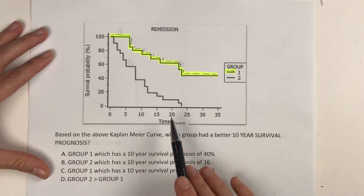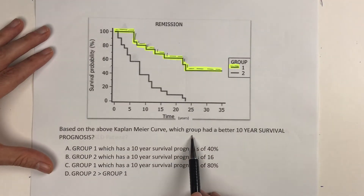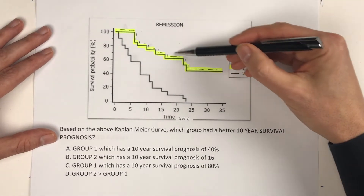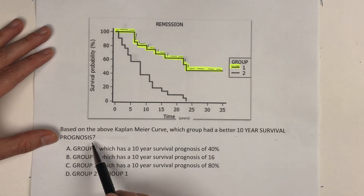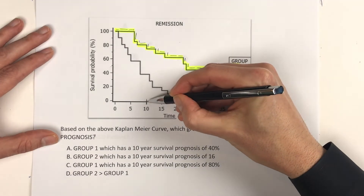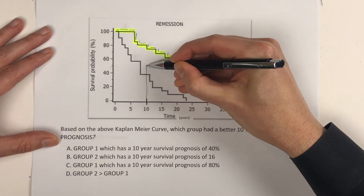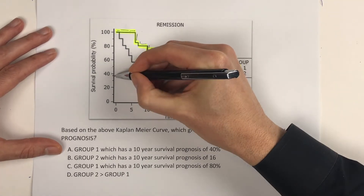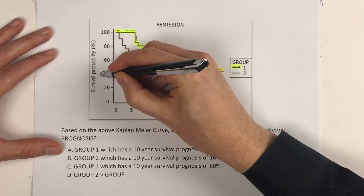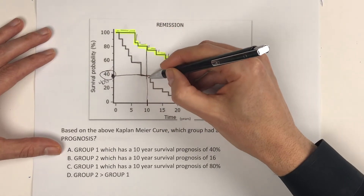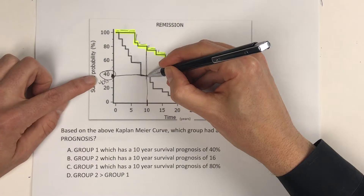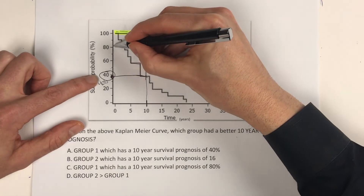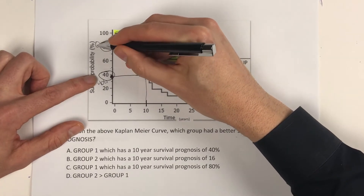Same graph, next question: based on the above Kaplan-Meier curve, which group had a better 10-year survival prognosis? Group one and group two — at 10 years, group two had roughly a 40% survival rate. If you took that drug or were in that part of the study, at 10 years you had a 40% chance of surviving. Group one, on the other hand, was looking at roughly 80%.